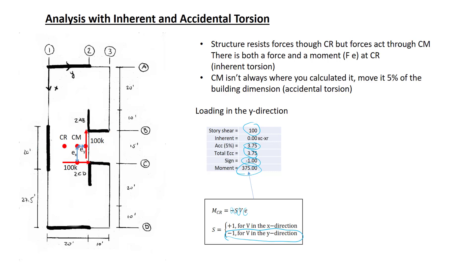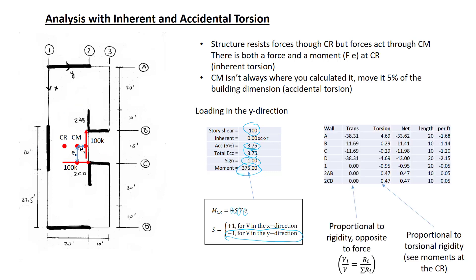Let's compute the wall forces for loading in the y-direction. Once again, I've listed all the walls. Walls A, B, C, and D act in the y-direction, so these are the only walls that take translational forces. Walls A and D are stiffer, so they take a larger proportion. The forces in the walls due to torsion take the previous results, multiplied by this moment here of 375 kip-feet to get the values in this column. Add the translation and the torsion to get the net. And these are the resulting forces in all my walls. Divide them by the length to get shear per unit length.